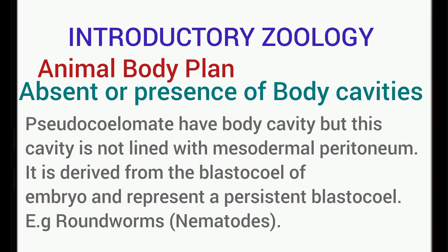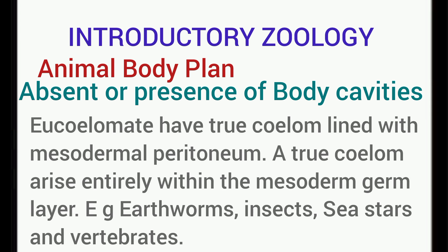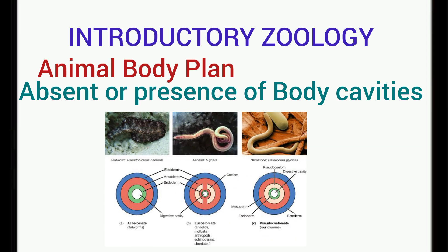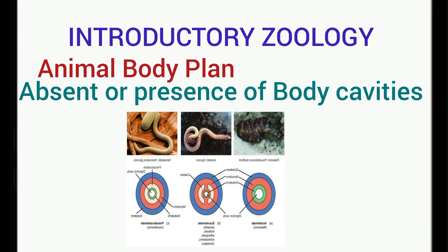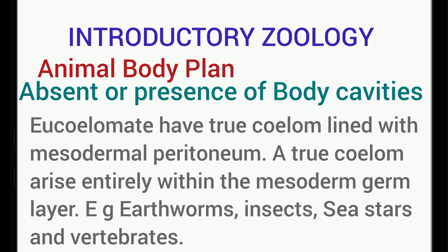Pseudocoelomates are animals that possess a cavity surrounding their gut. However, this cavity is not lined with mesodermal peritoneum. It is actually derived from the blastocoel of the embryo. It should be noted that the pseudocoelomate cavity is derived from both the endoderm as well as the mesoderm, while the true body cavity is derived only from the mesoderm.